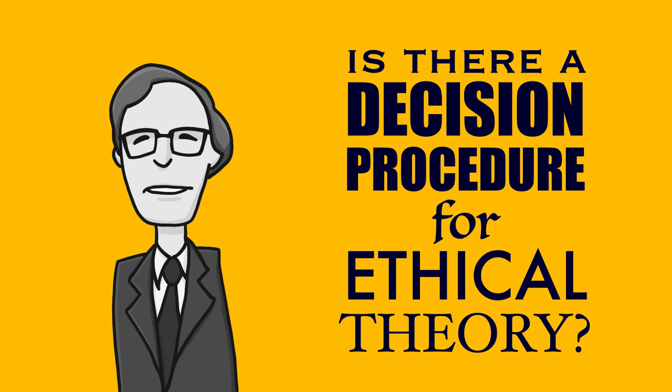A decision procedure is just a series of finite steps to achieve that goal. This is the question Rawls is trying to answer: is there a decision procedure for ethical theory, and what is it? And he says yes, there is. In the simplest and roughest terms, his procedure is this: first, you identify competent moral judges; second, you compile their considered moral judgments; and then third, from those considered moral judgments, you abstract away the moral principles that cover those considered moral judgments. And from that, you get your moral theory.